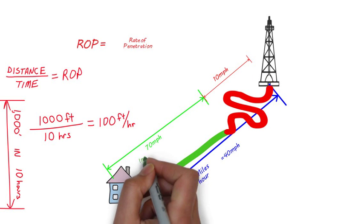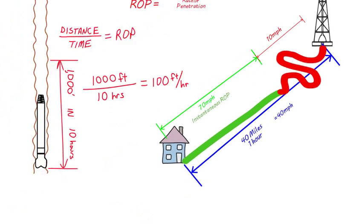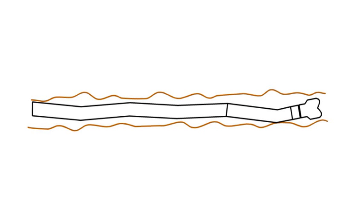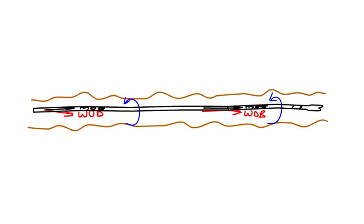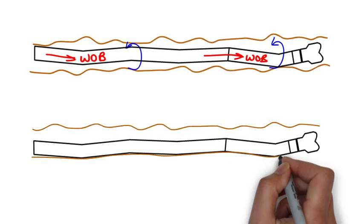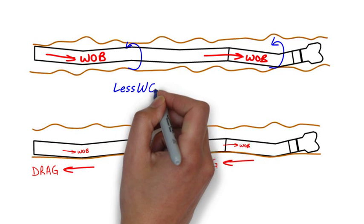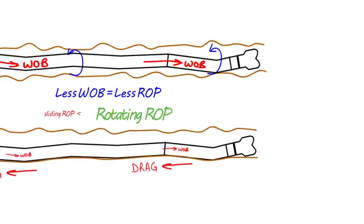In drilling, instantaneous ROP usually refers to the maximum, real ROP through an interval or formation. Just like in driving, you can go faster in a straight line than you can around a curve. While drilling straight ahead in rotating mode, the drill string rotation reduces the drag on the drill string, allowing weight to transfer more directly to the bit. While steering, though, the static contact between the drill string and the wellbore causes a lot of friction, or drag. Because of the drag, there is less weight available to drive the bit ahead, which is why sliding ROP is usually much lower than rotating ROP.